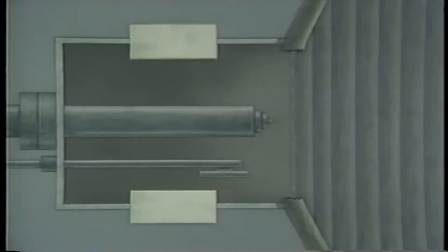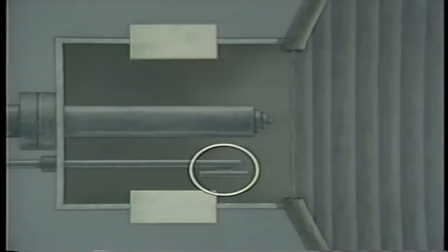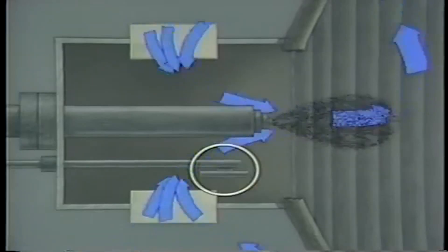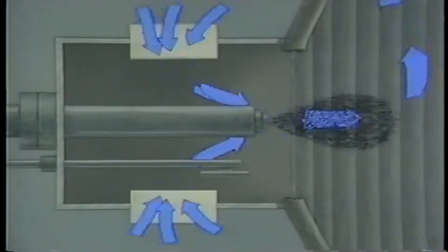However, boiler explosions occur during unusual conditions. Let's suppose that the igniter malfunctions and does not spark as it is supposed to. The operator turns the controller to start the igniter sparking, but in this case, the igniter is slow to respond and doesn't spark right away. The operator next establishes airflow to the burner port and then starts fuel flow. The igniter still doesn't spark. The air and fuel form a combustible mixture, and the mixture accumulates in the boiler as more fuel and air are supplied. If the igniter suddenly begins sparking, it will ignite this abnormally large mixture. The result is an explosion.